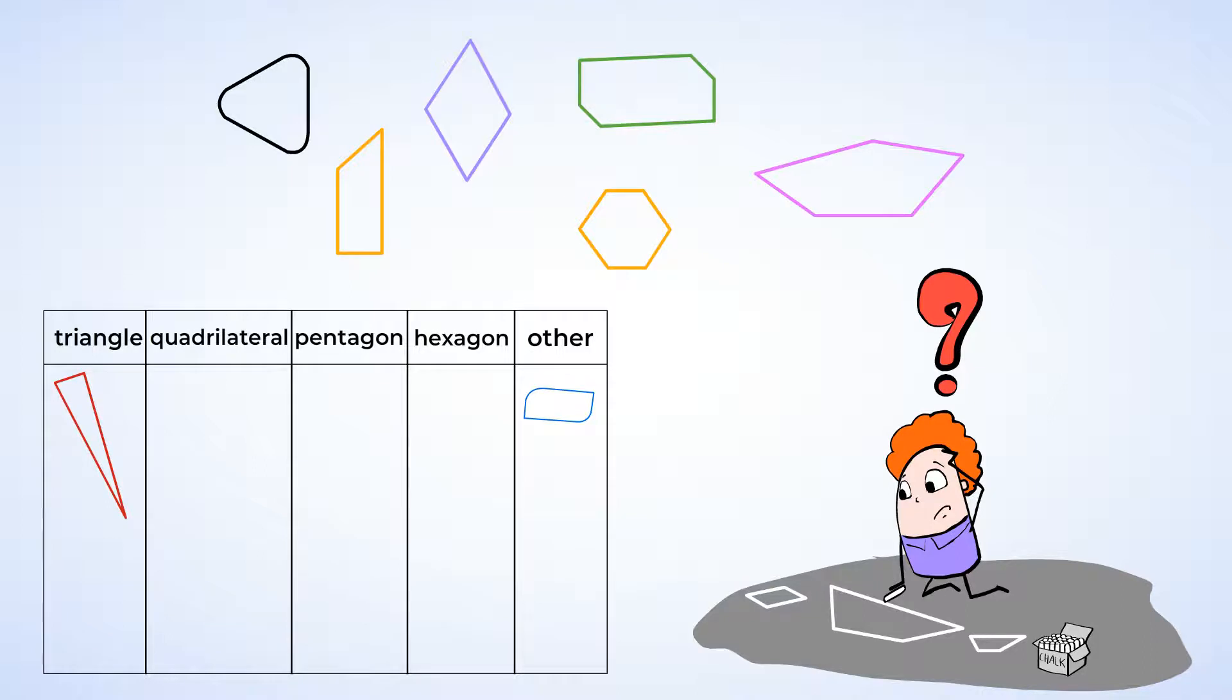I also see another shape here with curved parts. Look at the black shape. It has 3 sides but no angles. So this also belongs in other. And let's look at the green shape. Counting the side, there are 6 sides. And there are also 6 angles as well. It's a hexagon.